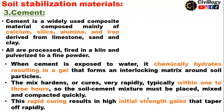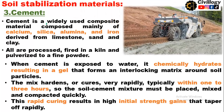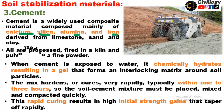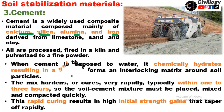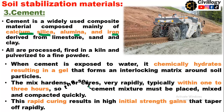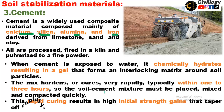The third material used for soil stabilization is cement. Cement is a widely used composite material composed mainly of calcium, silica, alumina, and iron, derived from limestone, sand, and clay — all processed, fired in a kiln, and pulverized to a fine powder. When cement is exposed to water, it chemically hydrates, resulting in a gel that forms an interlocking matrix around soil particles. The mix hardens very rapidly, typically within one to three hours, so the soil-cement mixture must be placed, mixed, and compacted quickly.